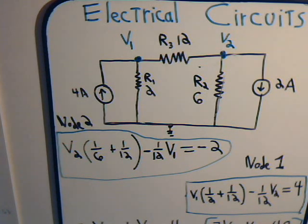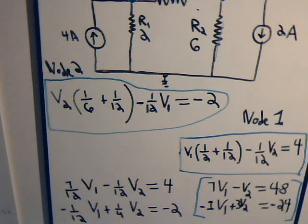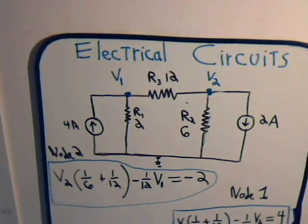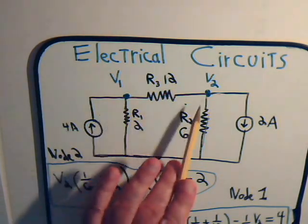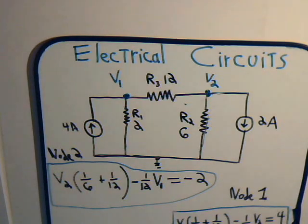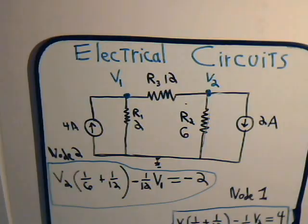So now we're at a point where we want to determine what is voltage V1 at node 1 and what is voltage V2 at node 2. Once we know these voltages, then of course we can determine the currents that go through these resistors and the direction of the current as well.